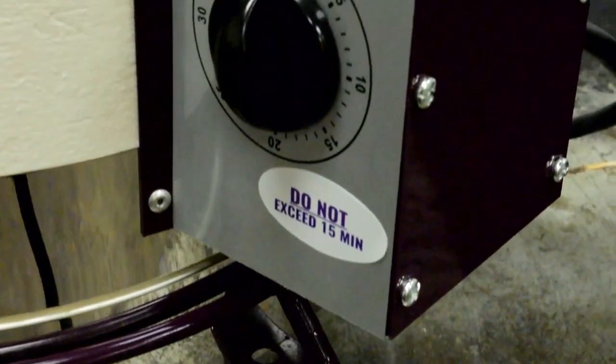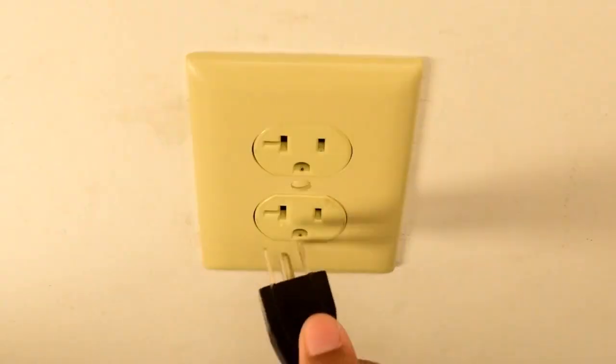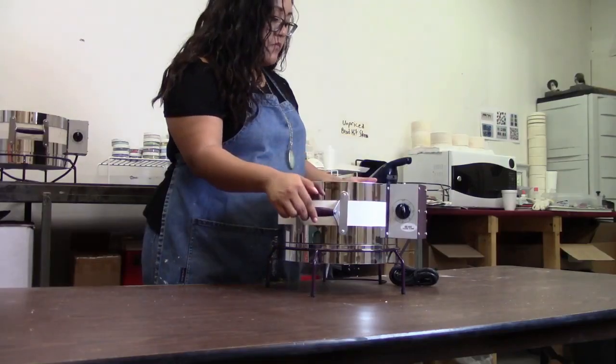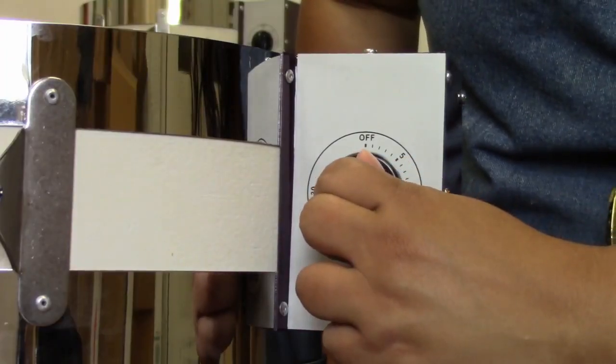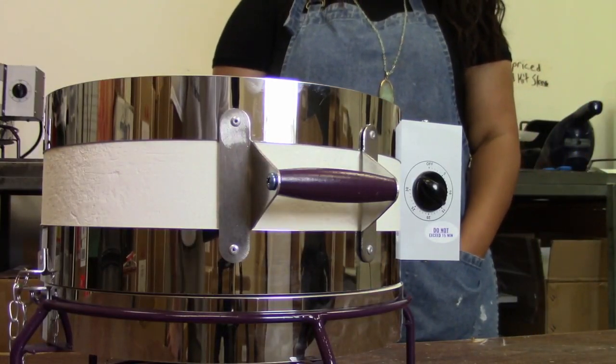The Fuseworks craft kiln must be pre-fired before its first use, so let's do that now. Plug in your empty kiln, close the lid, then turn the dial clockwise to 15 minutes. Do not leave the kiln unattended at this time.